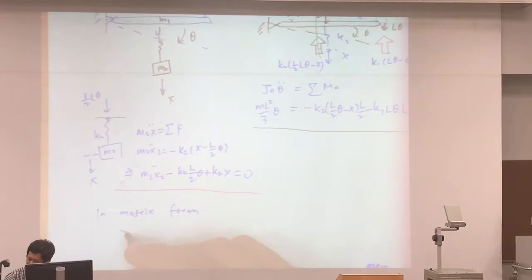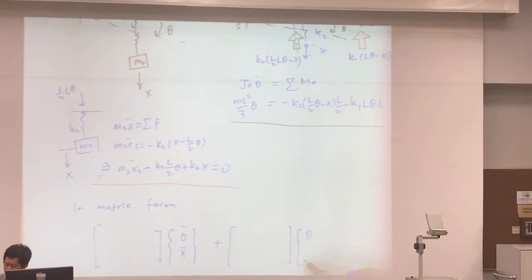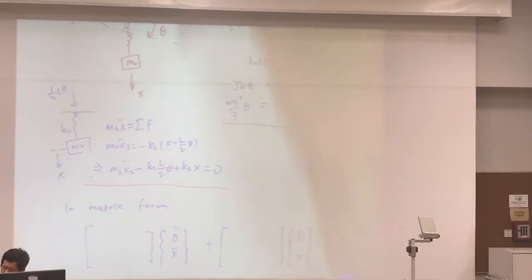In the matrix form, because now you have a hybrid coordinate, one is the angular and one is the linear one.